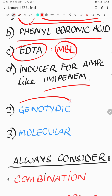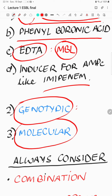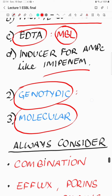For genotypic detection, you can do whole genome sequencing or identify specific sequences known to carry the beta-lactamase. This is the best way to know which beta-lactamase you are dealing with, but it is more cumbersome and less available. Molecular methods basically only tell you that a carbapenemase is present, but cannot tell you the class or type.